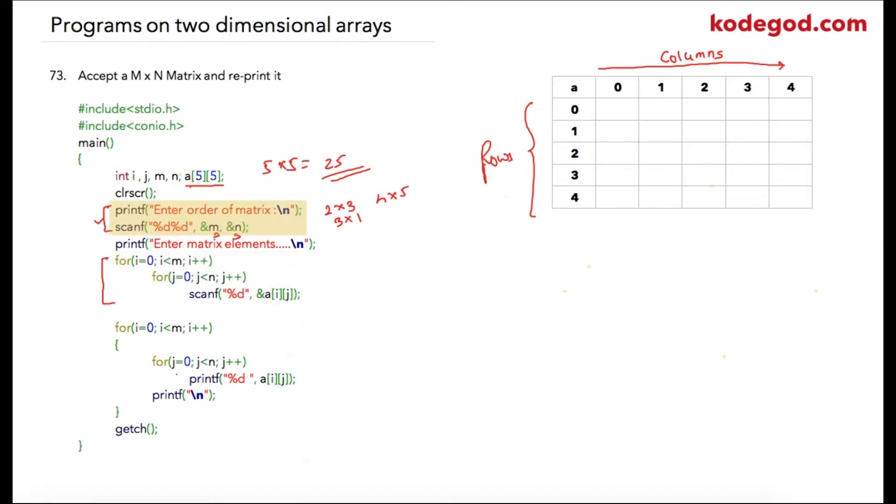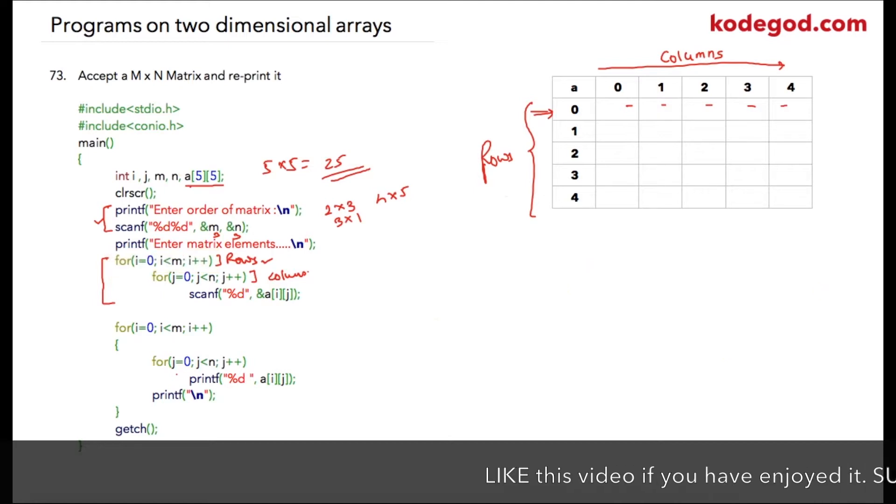The first loop will be executed for rows and the second loop will be executed for columns. So for every row, this loop will be executed which will internally iterate through columns. Inside the second for loop, using the scanf, we are going to store values of array elements.